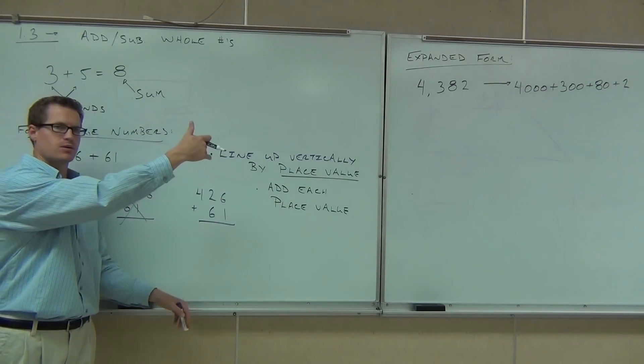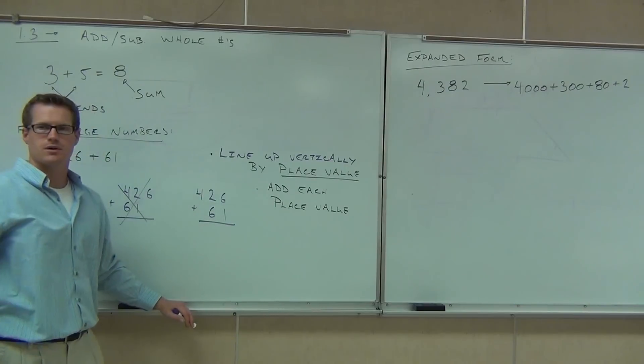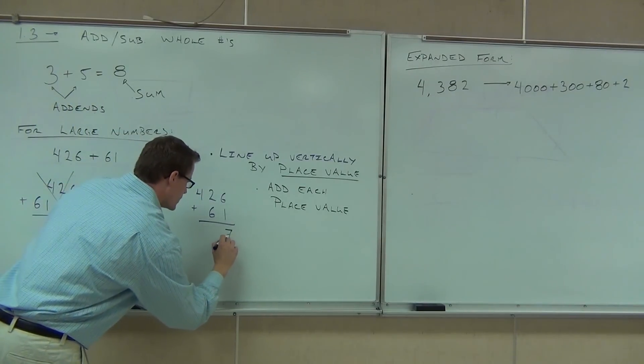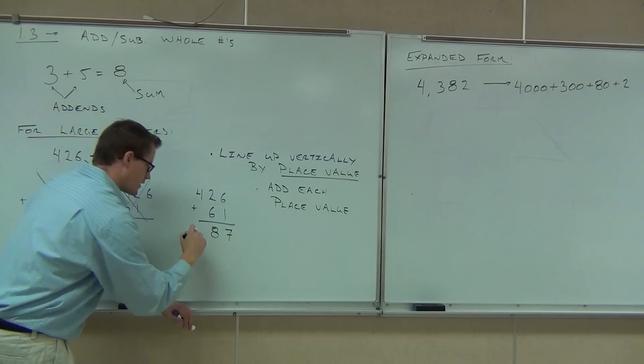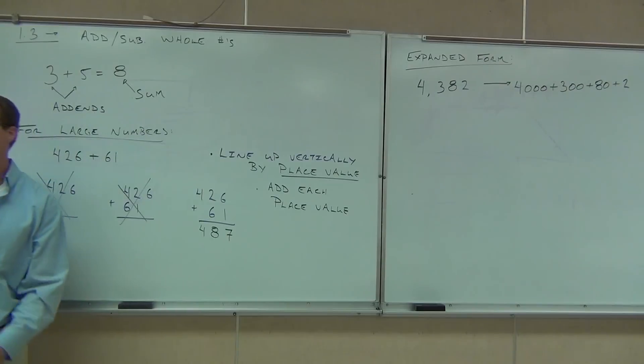So let's go ahead and do this. We start on the right-hand side. We're going to add those digits. How many ones am I going to have? Perfect. How many tens am I going to have? Hundreds? Good. There's really no hundreds down there to add. So we have 487. That's our sum.